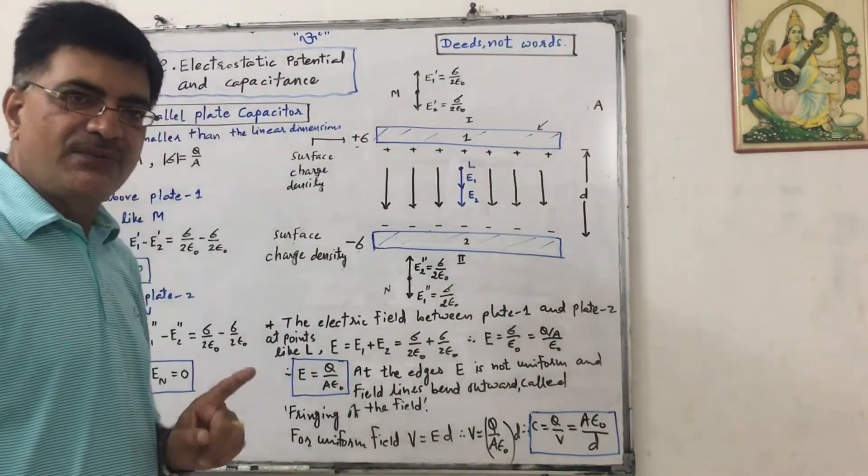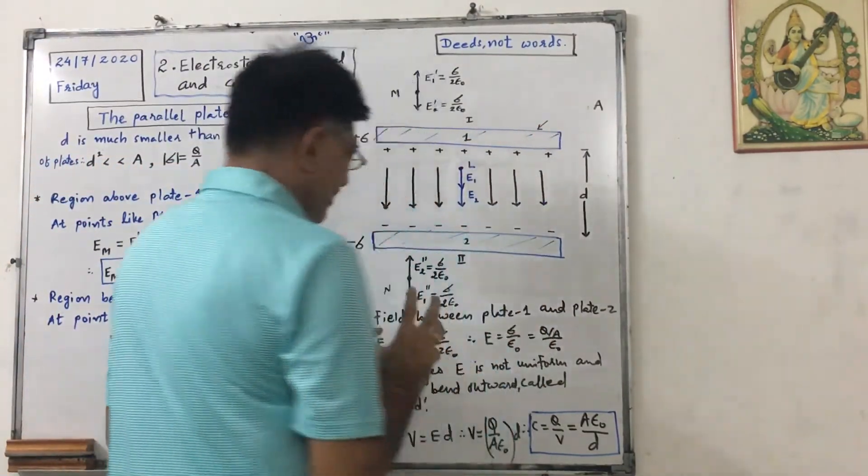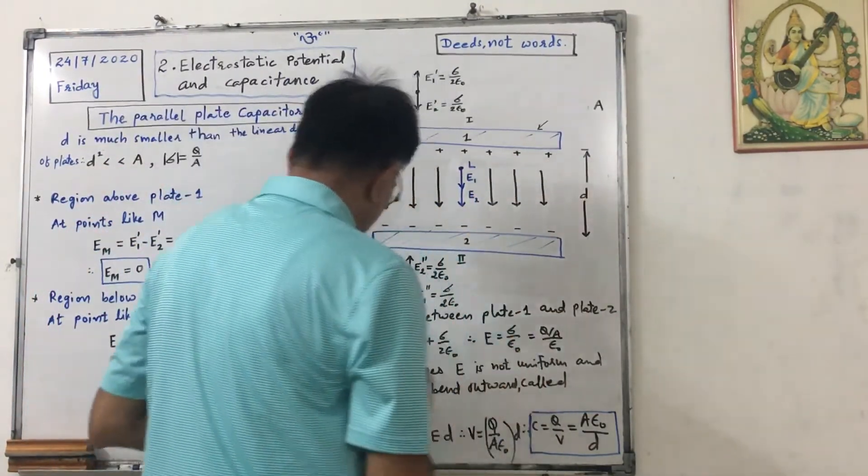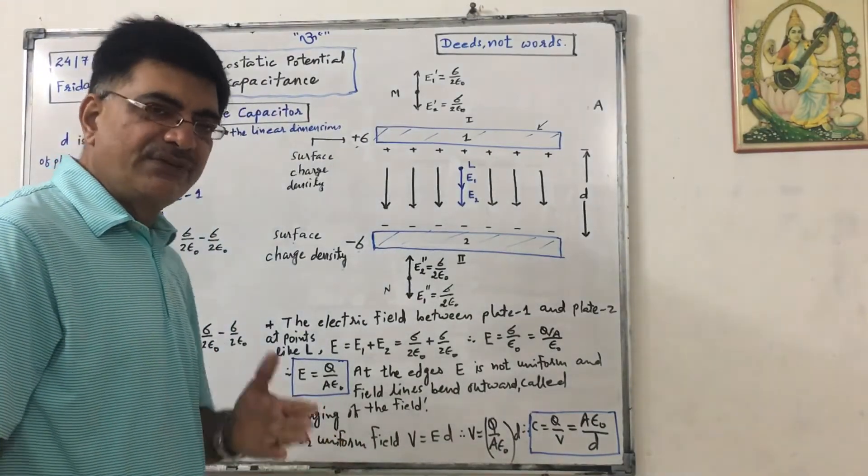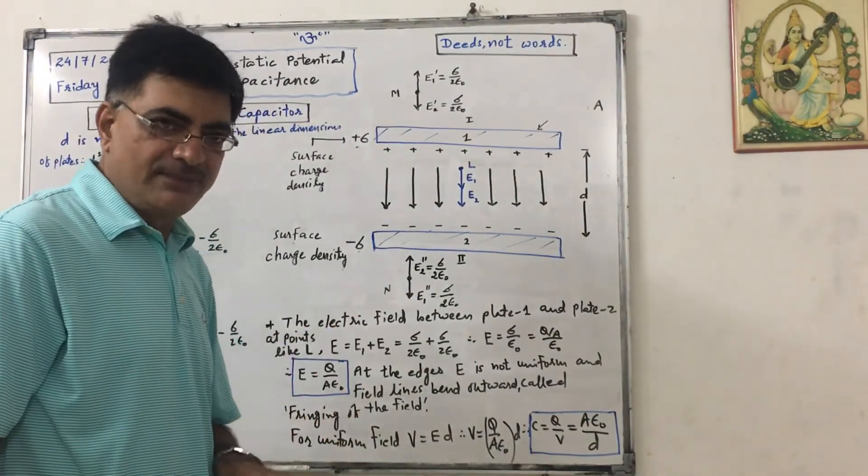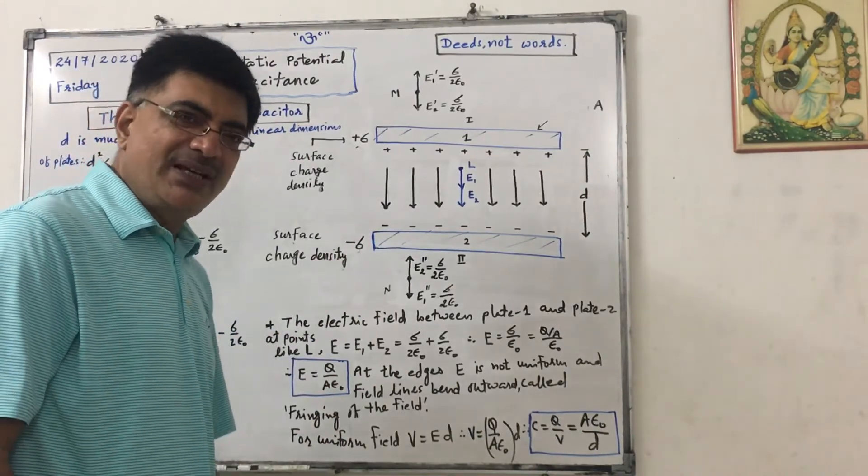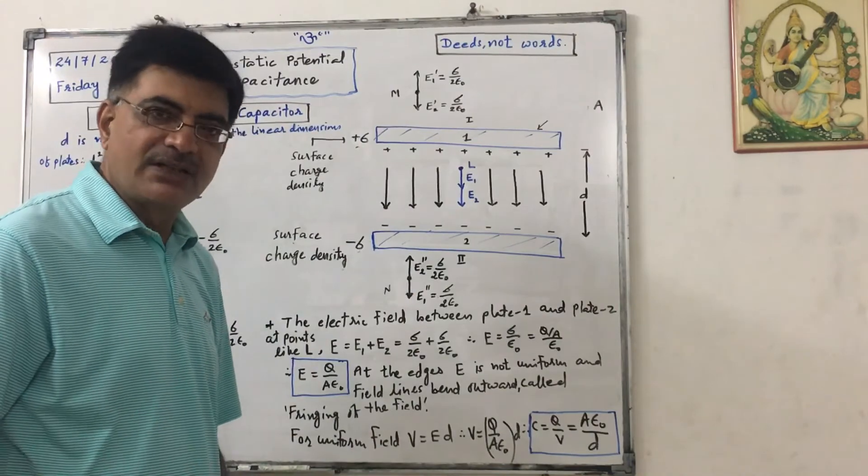This is uniform electric field in inner area. But in case of a dielectric medium at the edges, this field won't remain uniform. Here we are considering it as a uniform electric field. Fringing effect we will discuss afterwards in special lectures of NEET, because it is not discussed in our textbook.